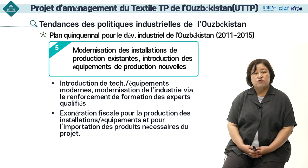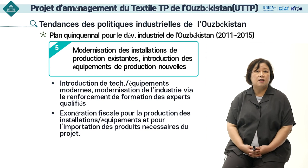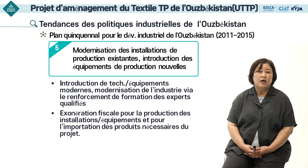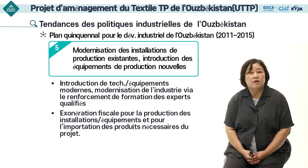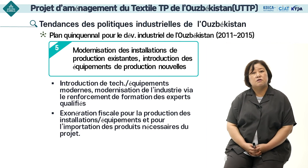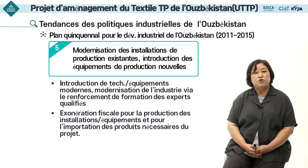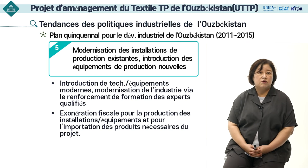Le gouvernement soutient activement la modernisation des installations de production existantes et l'introduction de nouvelles installations de production. En introduisant les technologies et les équipements modernes et en renforçant la formation de professionnels qualifiés, la modernisation de l'industrie est encouragée. Dans ce cadre, il existe une politique de soutien qui exonère les droits de douane lors de l'importation d'équipements, d'installations, de pièces détachées ainsi que des produits qui ne sont pas fabriqués en Ouzbékistan.